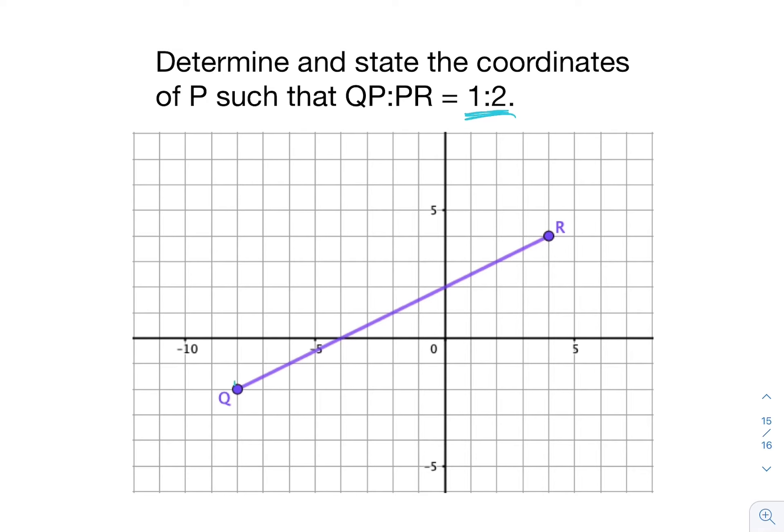To get from Q to R, I go up 1, 2, 3, 4, 5, 6. So the rise is 6, or the vertical distance is 6. Now I'm going to count the run or the horizontal distance. That's 1, 2, 3, 4, 5, 6, 7, 8, 9, 10, 11, 12.